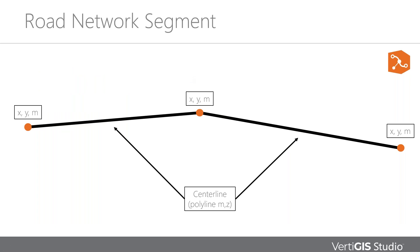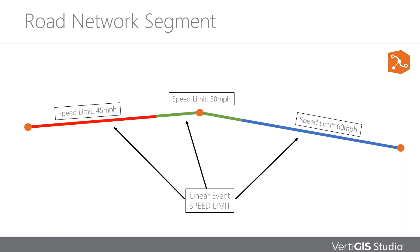Let's say we have our linear reference data and look at a typical example where we're not really making the most of it. This is a typical road network segment — we've got two polylines with x and y for the start and end of each, plus an m value, so we know it's a linear reference data set. If you've used road data in the past, you'll know there's a whole host of associated information that can go along with it. In this instance, we've added our speed limit data — red is 45, green goes on to 50, and blue goes on to 60.